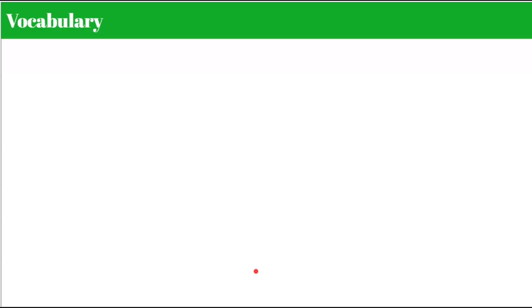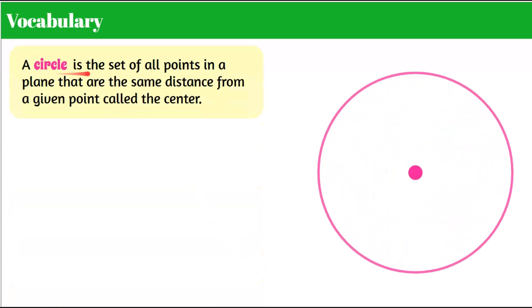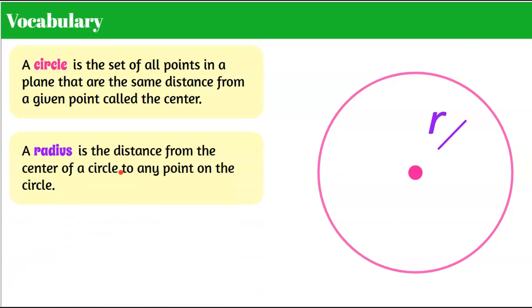To begin, I want to make sure you understand some key vocabulary words. A circle is the set of all points in a plane that are the same distance from a given point called the center. Here we have a circle and here is the center. There's an infinite amount of points that make this outside border — it's curved and closed, extends all the way around, and every point on this outside edge is the same distance from the center.